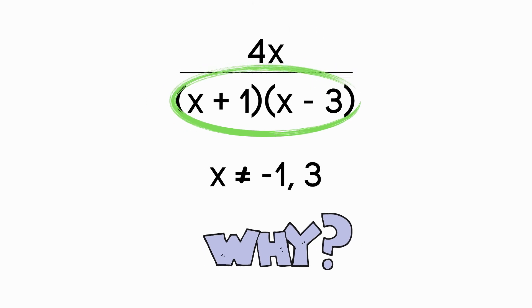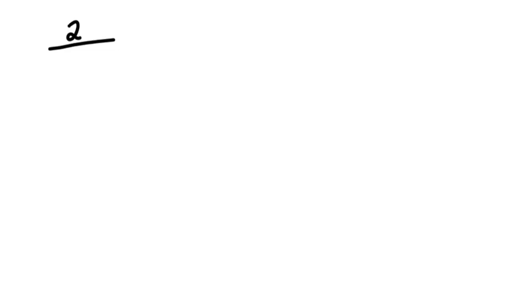When we work with rational expressions, we have to state restrictions on the denominator. But why is that? Let's take a look at an example. Say I have a rational expression 2 over x plus 1, and I need to see where the expression will be undefined. Undefined means it will have no meaning — it will have no possible value.